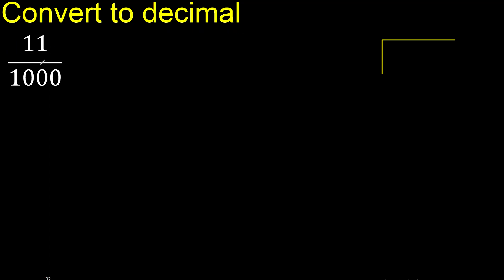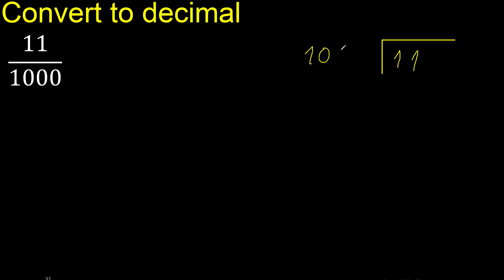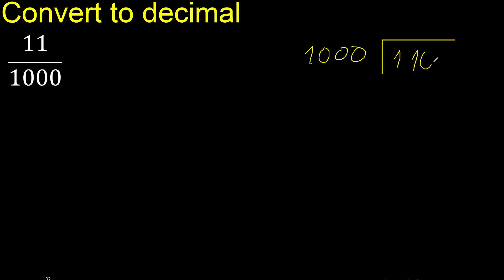11 divided by 1000. 11 is less than 1000, therefore complete with 0. Always complete with 0. The decimal point is placed here — 0 point is here.